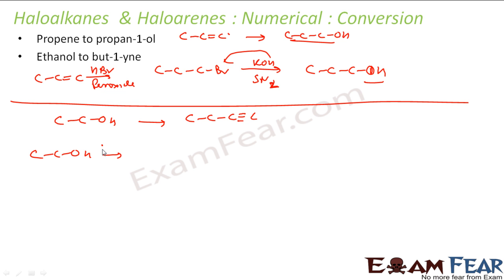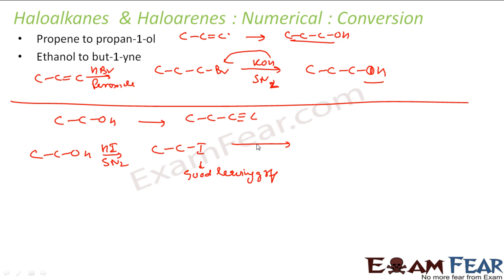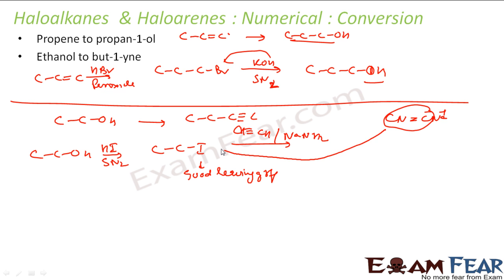React ethanol with HI to get ethyl iodide (SN2 reaction). Then react with HC≡C⁻Na⁺ (formed from acetylene and NaNH2) — the carbanion attacks the iodide in another SN2 reaction to give butyne. So the overall conversion involves SN2 followed by SN2.